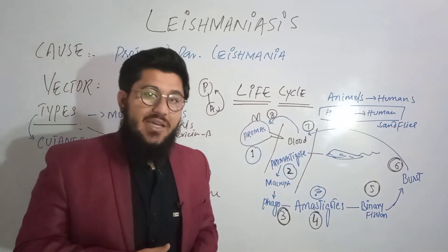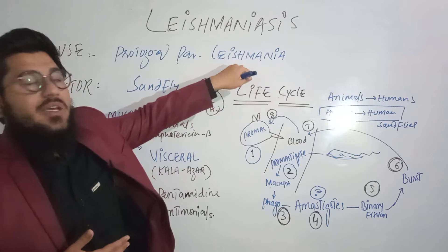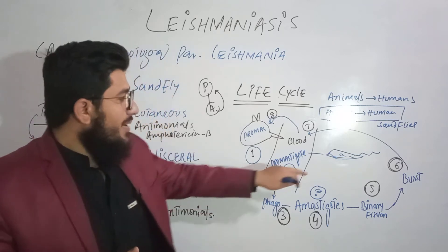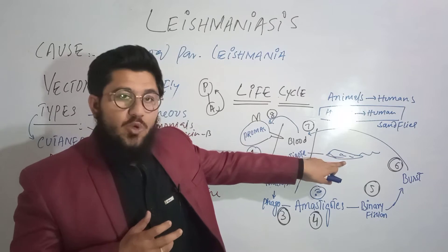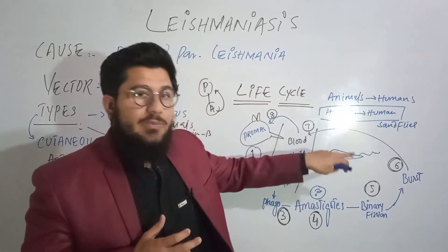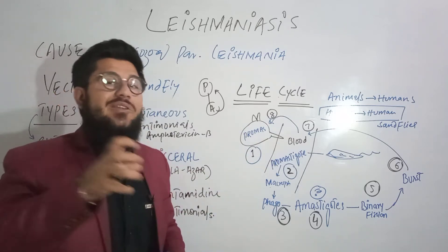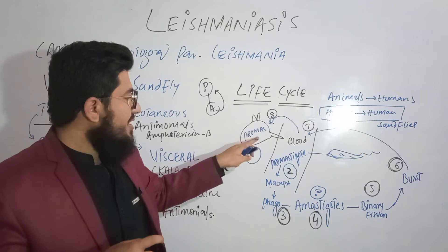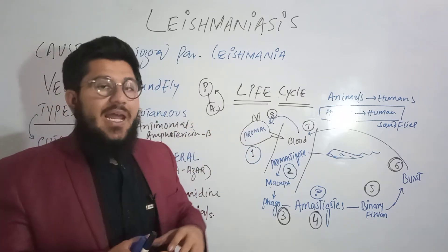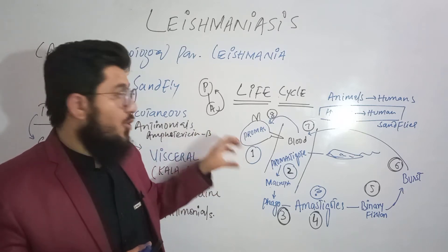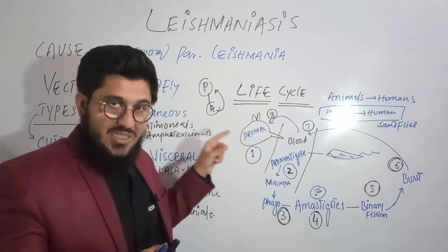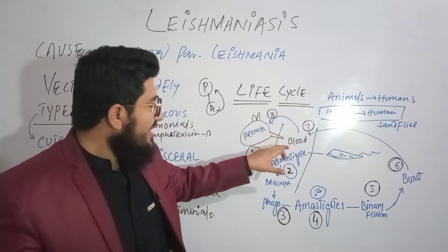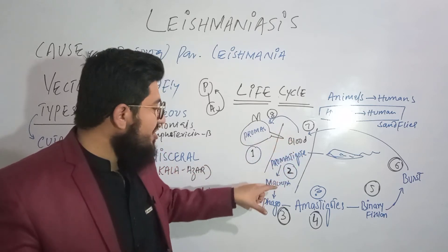Now let's come towards the life cycle of Leishmaniasis, also called the life cycle of the Leishmanial parasite. When the Leishmanial parasite sits in the sand fly, it is named the promastigote — a flat structure with a flagellum. This promastigote is transferred from one human to another by means of the sand fly. The sand fly injects this Leishmanial parasite — the promastigote — into a human, where it enters the blood.